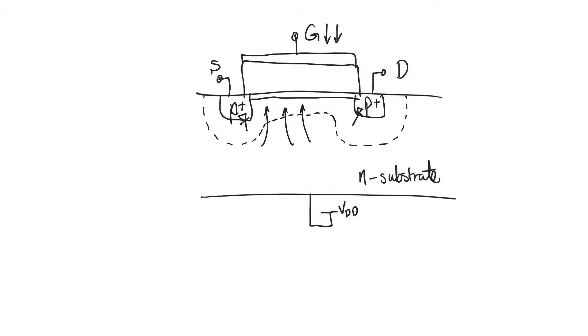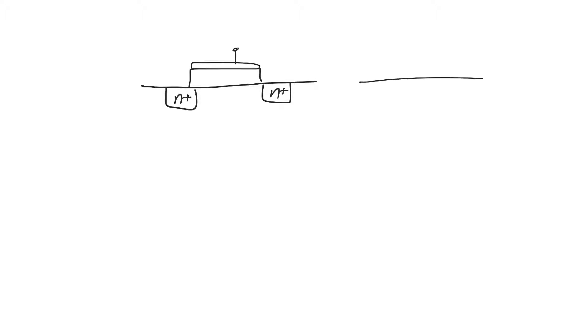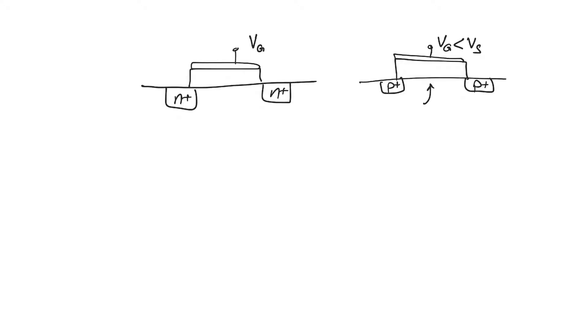As with the NMOS, there is also a depletion region that forms below the channel, enveloping the entire transistor. The PMOS is a very similar device to the NMOS, but they also have differences that are important to point out. Comparing the two: for the PMOS to work, we have to apply a relatively negative gate voltage. V-gate less than V-source will attract holes to form the channel, whereas V-gate greater than V-source by more than V-threshold will form a channel in the NMOS.